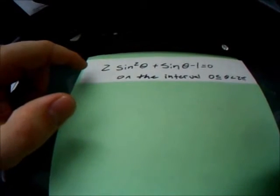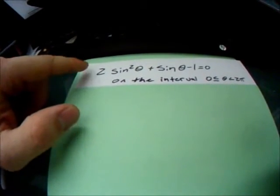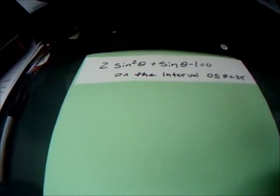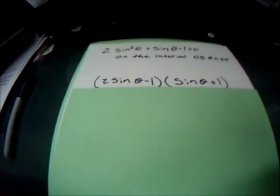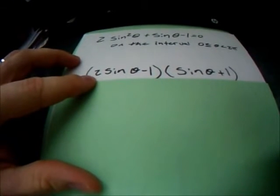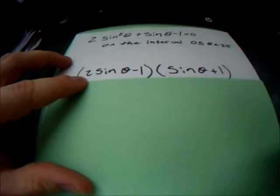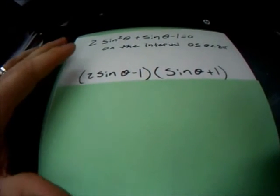So our first step, what we want to do here is factor our 2 sine squared theta plus sine theta minus 1. So we get something like this: 2 sine theta minus 1 times sine theta plus 1. So this is a little bit easier to work with.